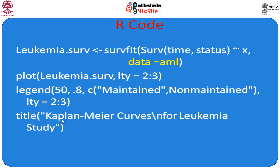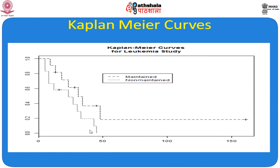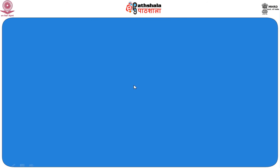We add a title: 'Kaplan-Meier curves for leukemia study'. This title can be changed based on your study interest. Looking at the graph, one line shows maintained patients and the other line shows non-maintained patients. It is obvious that maintained patients have better survival compared to non-maintained patients. The coordinates 50 and 0.8 position the legend indicating maintained and non-maintained groups on the graph.